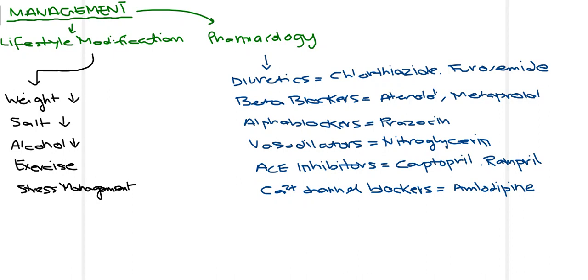ACE inhibitors such as captopril and ramipril work by decreasing production of angiotensin 2, thereby decreasing blood pressure by acting on the kidneys. Calcium channel blockers such as amlodipine decrease cardiac contractility, reducing the workload of the heart. Not all drugs are used in a single patient — pre-hypertensive patients mainly need lifestyle modification, Stage 1 may use a single drug or combination, and Stage 2 typically requires combination drug therapy.